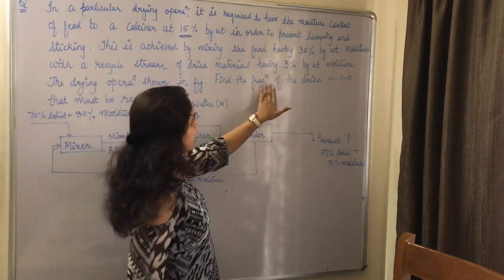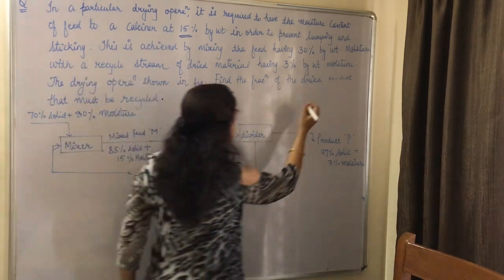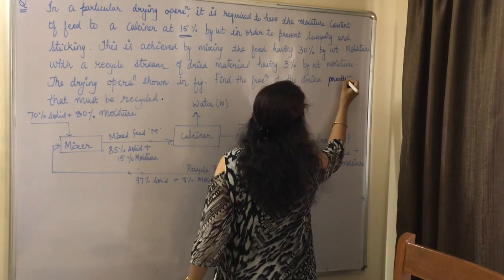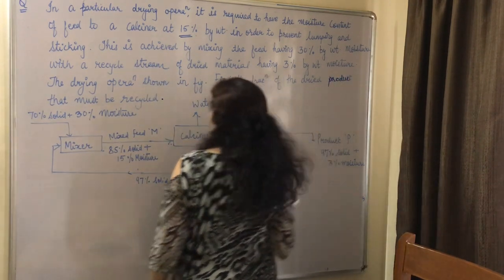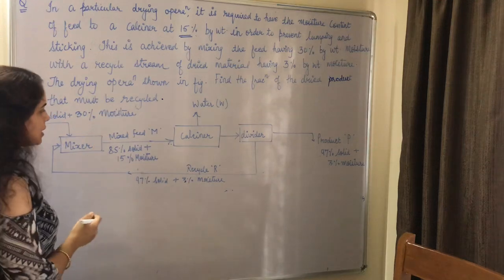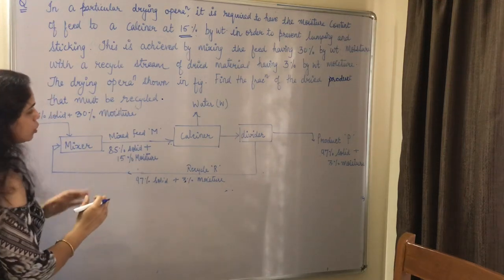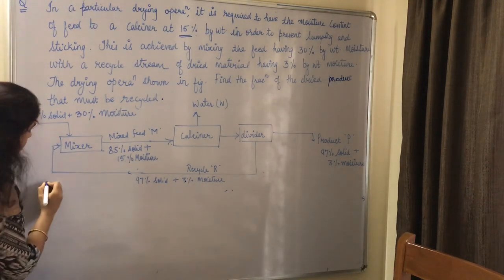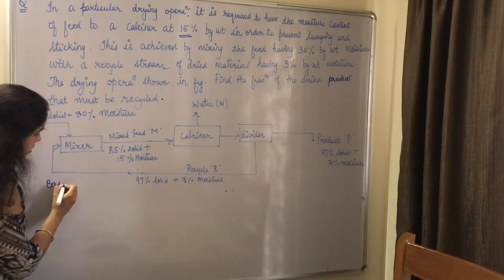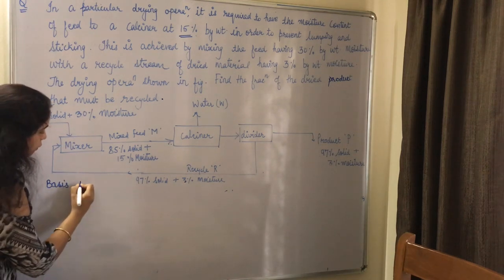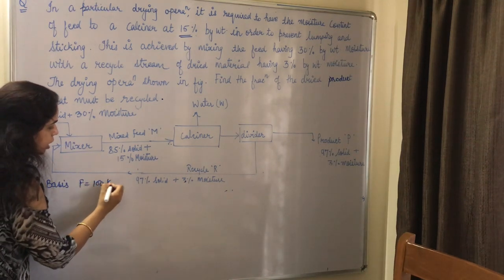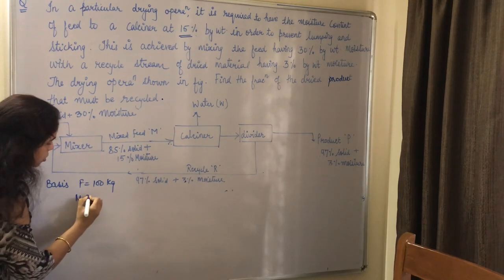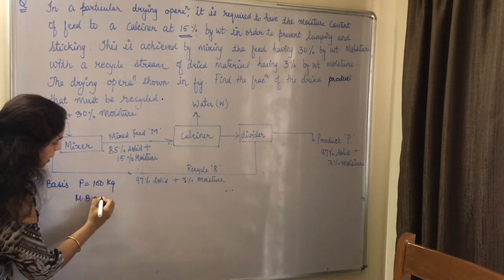We need to find out the fraction of dried product that must be recycled. We take the basis of feed as 100 kg and then do the material balance over the mixer.